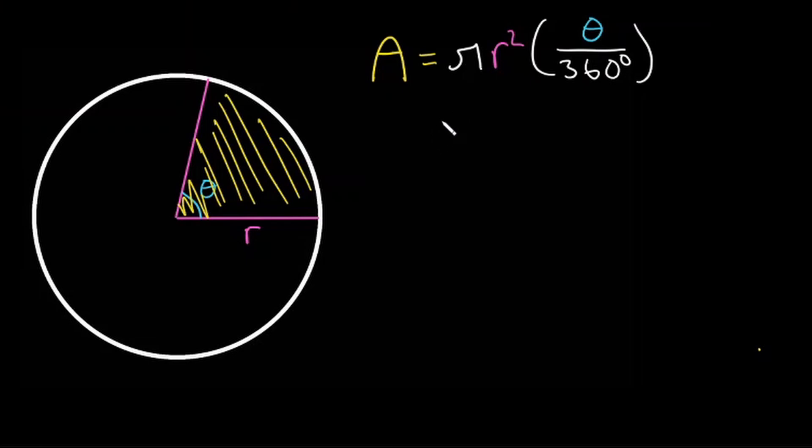So to find the area of a sector of a circle, you take the area of the entire circle and multiply it by a fraction that represents just a part of the circle. So it would be pi r squared times theta over 360.